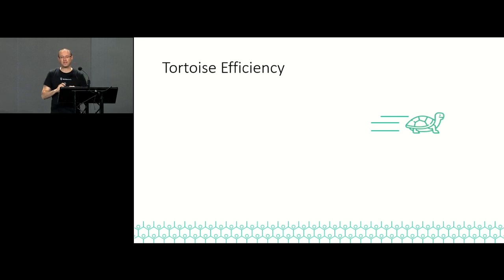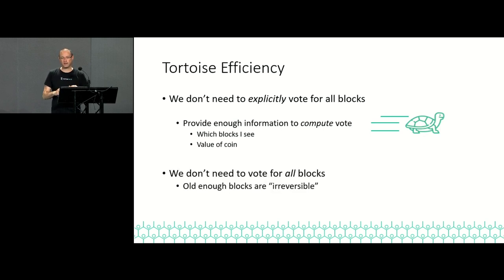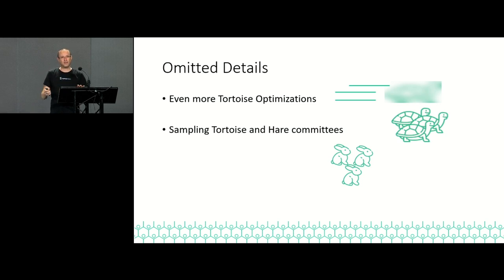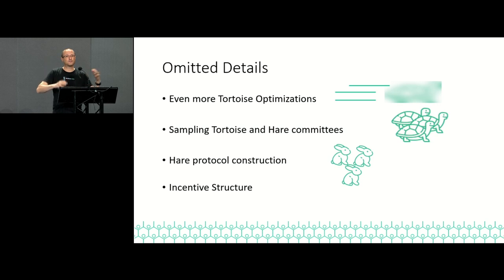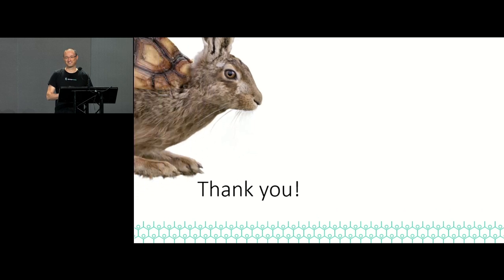Due to lack of time, I'm not going to talk about how we make the Tortoise more efficient — what I've described is quite inefficient; we actually do things that are a bit better. Additional things I won't cover include how we sample the committees, construction of the Hare protocol itself, and the incentive structures, which have a whole extra layer of work. And finally, the security proofs, which are very important but I will not even give a hint of how they work. Thank you.